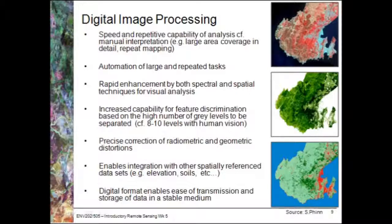Digital image processing allows us to correct for both radiometric and geometric distortions, which cannot be done manually with analog aerial photos — we really need a digital image processing system for that. It also enables integration with other spatially referenced data sets, such as soils, elevation, and water. Finally, the digital format enables ease of transmission and storage of data in a somewhat stable medium.